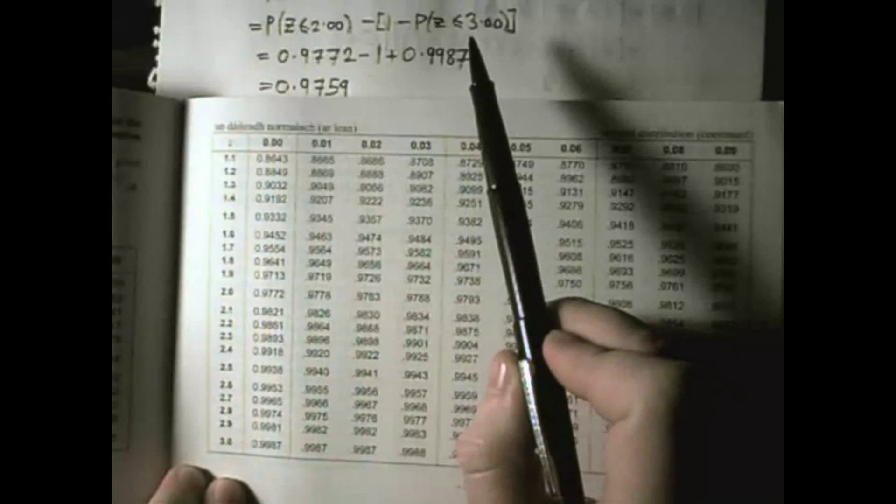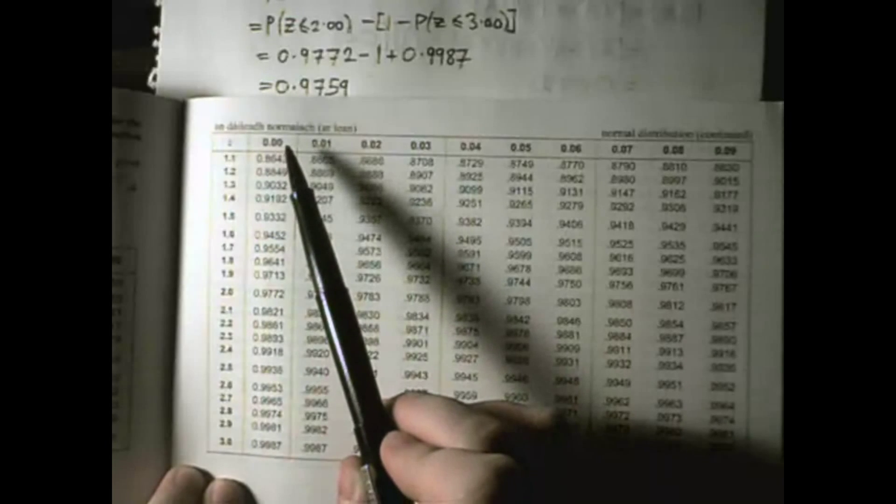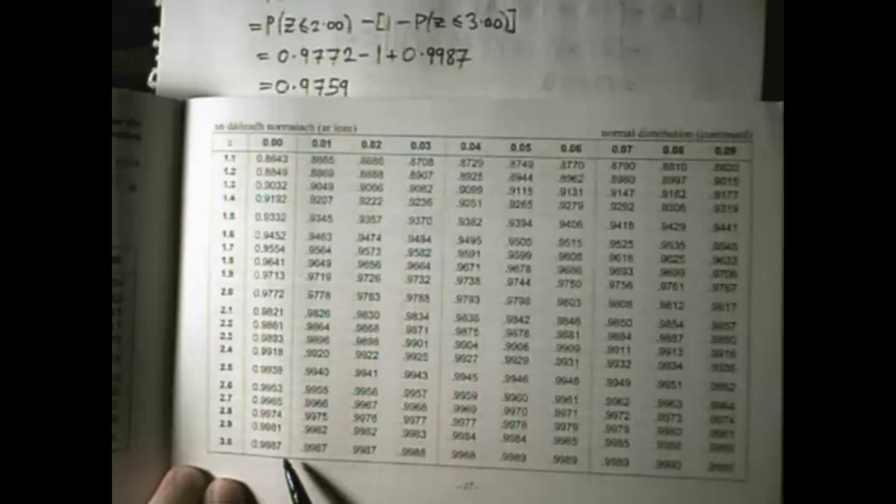The next one is z is less than 3.00, so there's 3.0 and the column where the third digit is 0, so that's 0.9987.